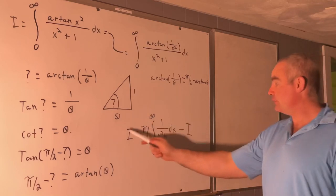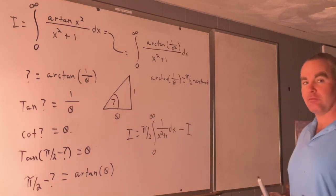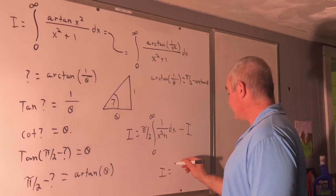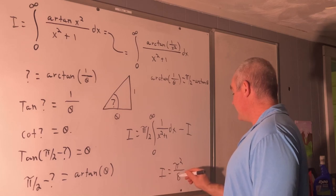That's going to give us 2I is equal to pi squared over 4. Or I is equal to pi squared over 8.